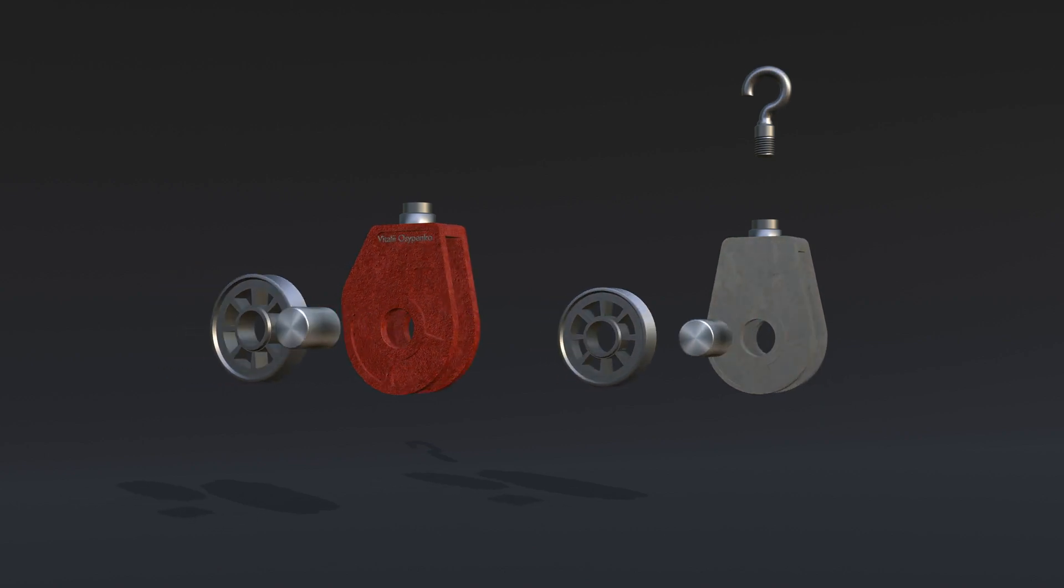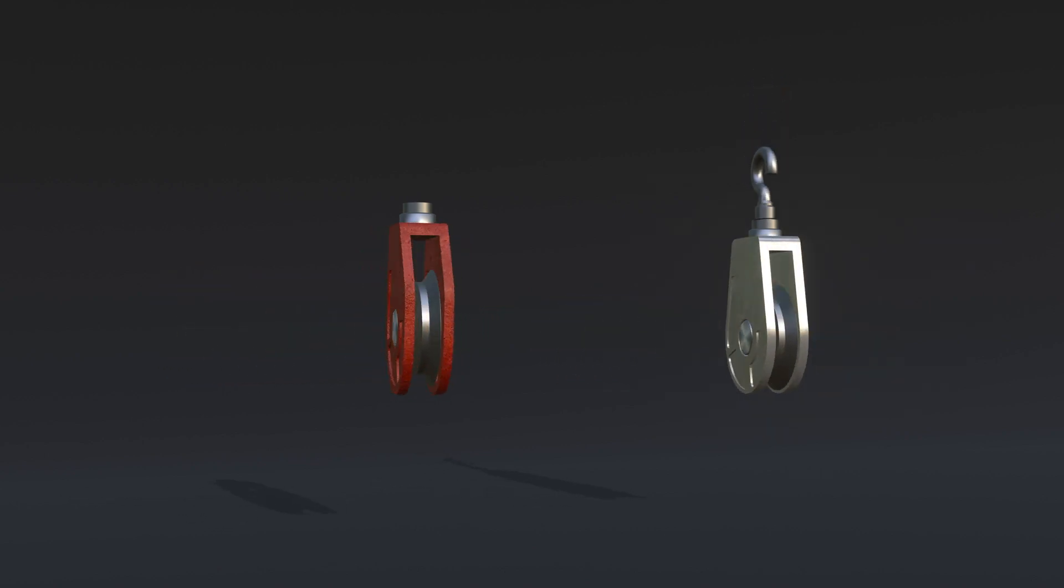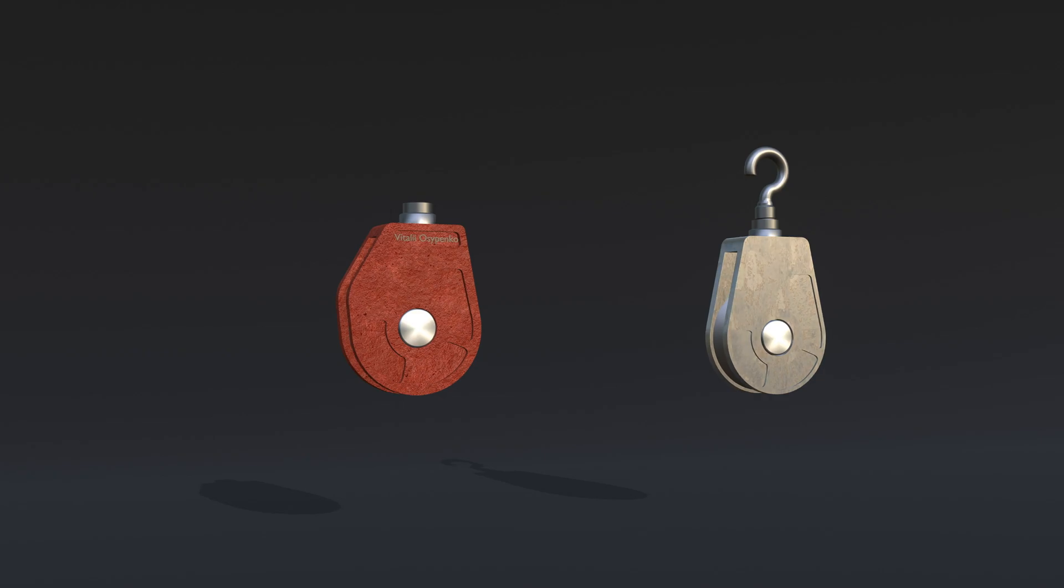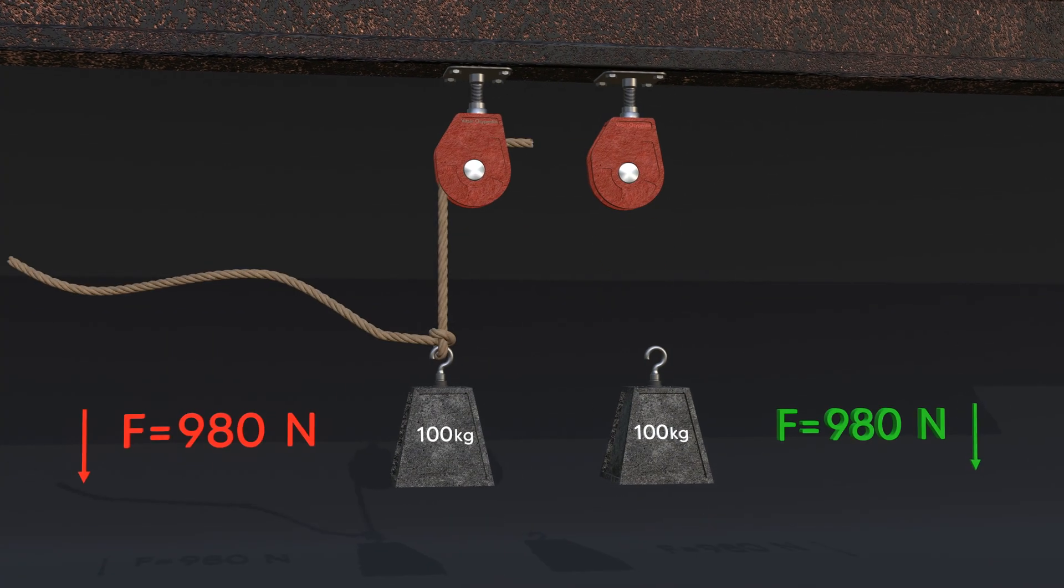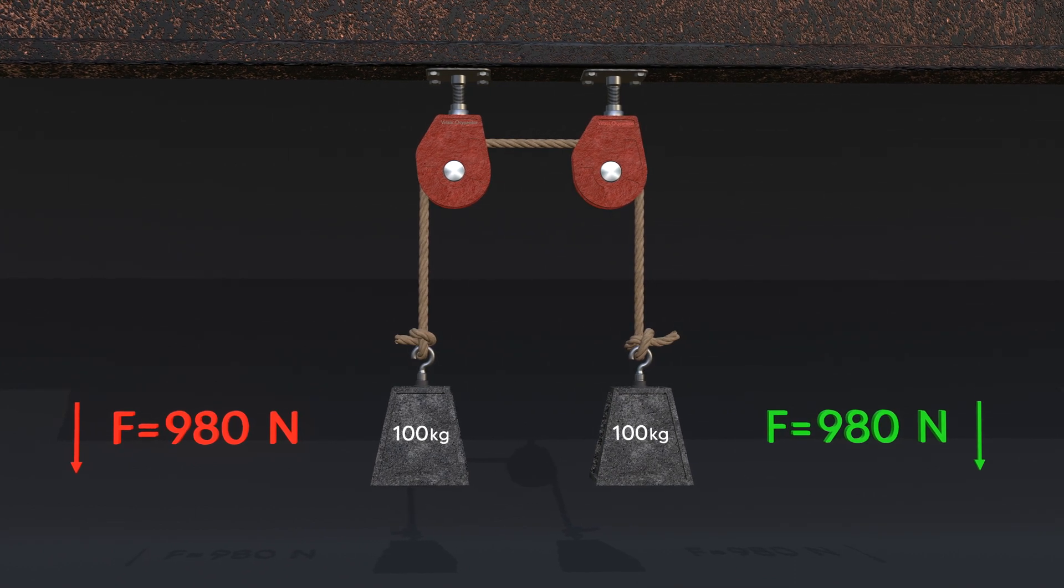The pulley is a simple structure that consists of a body, a wheel, and a pin. In this example, the gravitational forces of the two weights are equal, so the weights are in equilibrium.